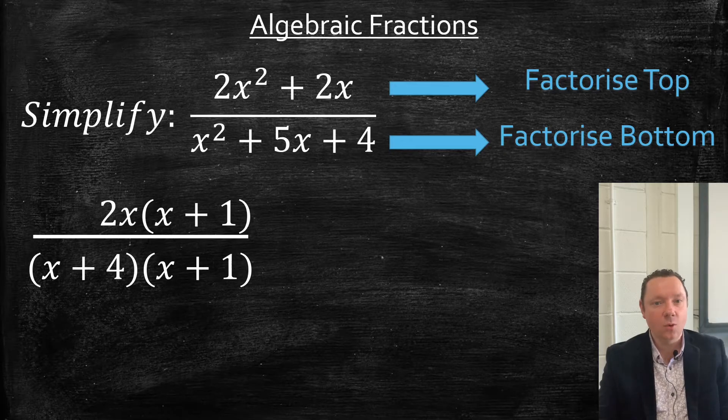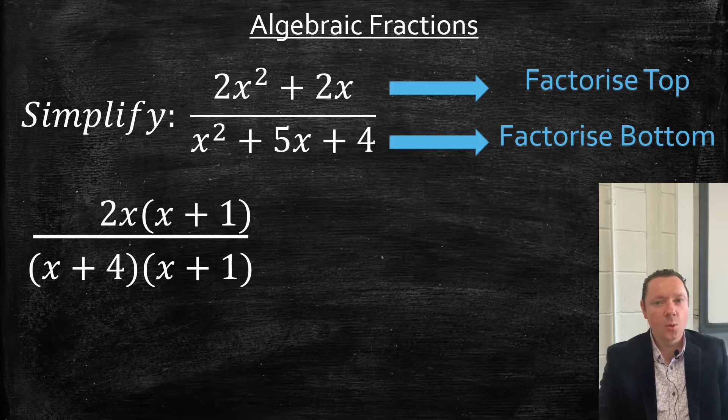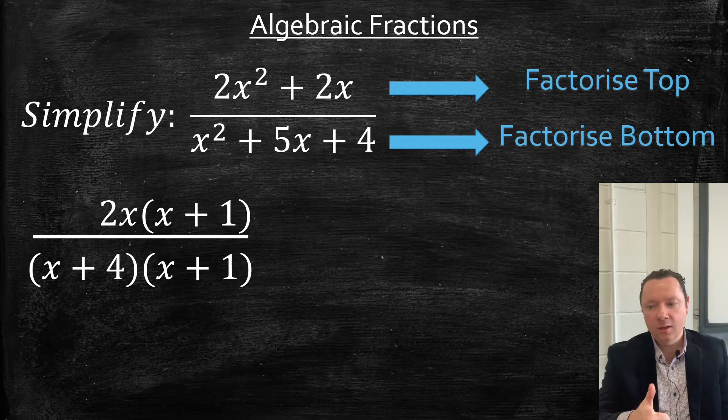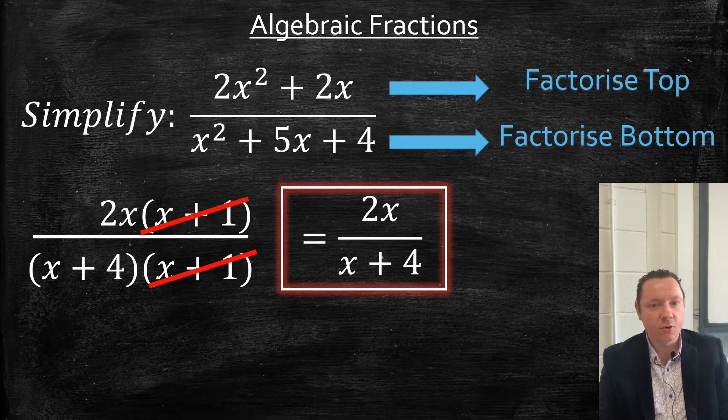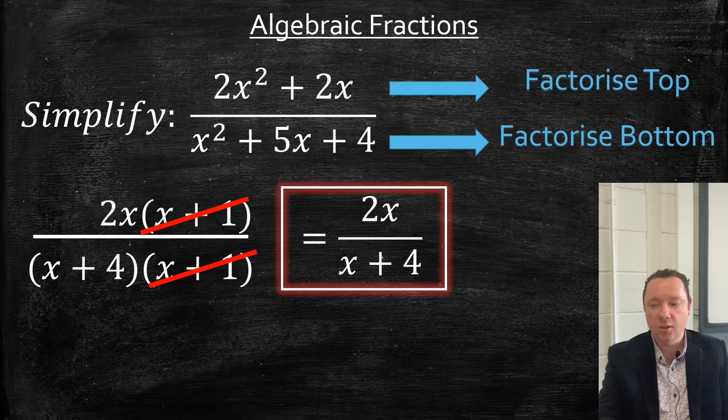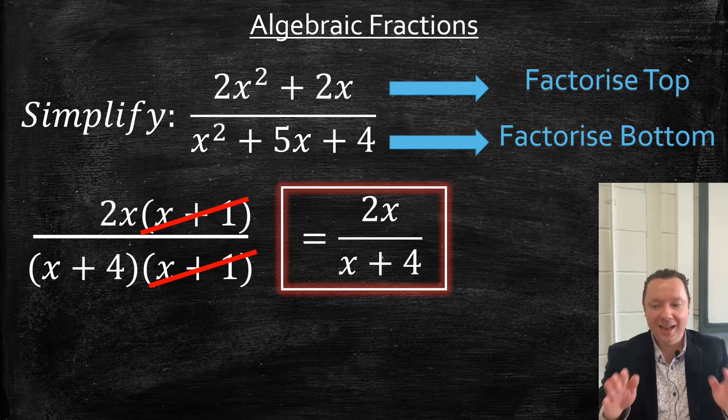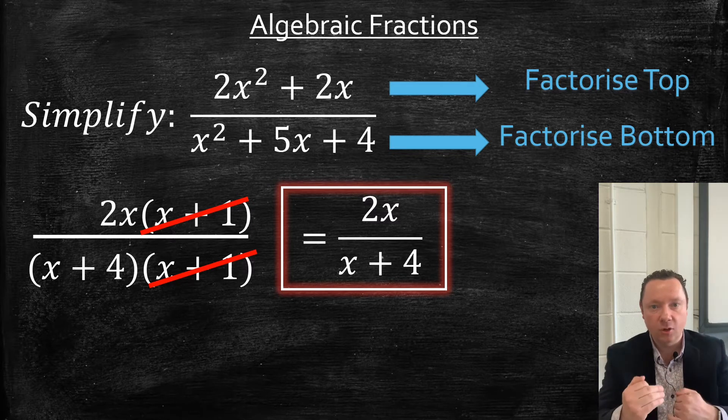Notice there's an (x + 1) on the top and there's an (x + 1) on the bottom. We are good to go. Let's cancel these guys and we end up with just 2x on the top and (x + 4) on the bottom. No more cancellation because there's nothing exactly the same on the top and the bottom. It has to be in brackets and brackets if you're going to cancel.